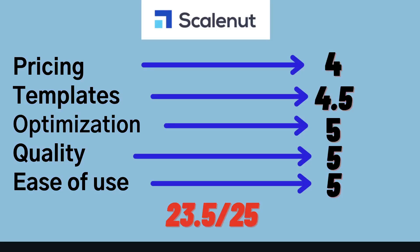For Scalenut, I'll give them 23.5 out of 25 — yes, that is higher than Jasper AI. I didn't think I'd actually find an AI copywriter better than Jasper, but I do believe Scalenut would be a better option for most people. For pricing, I'd give them a 4 out of 5 — really attractive pricing. For templates, a 4.5 out of 5 — they also have some really good templates included. For optimization, they have some of the best SEO tools included, so I'd give them a 5. For quality, really high quality, so a 5 out of 5. And for ease of use, another 5 out of 5. So in total, I'd give Scalenut a score of 23.5 out of 25.